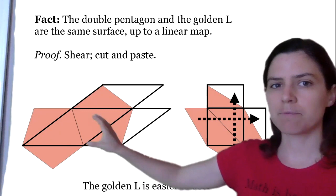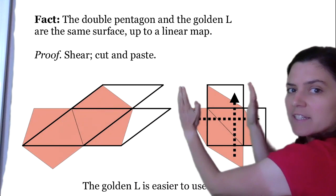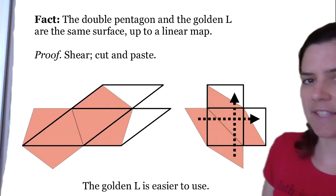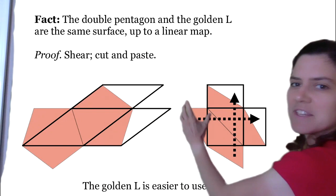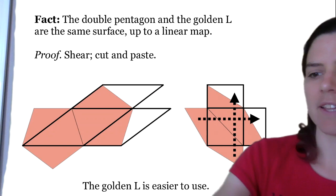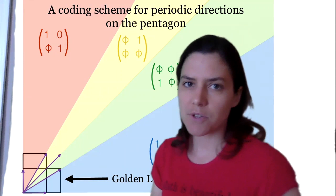If you take the picture on the left and shear it upwards, you get the picture on the right. Or take the picture on the right and shear it to the side, you get the picture on the left. The edges are identified, so you can simply move the triangle over, and then the triangle on the bottom moves up. And then we get the same surface. We use the golden L because it's rectangular, which makes it easier.